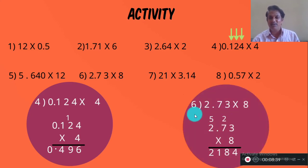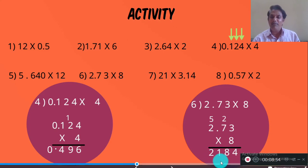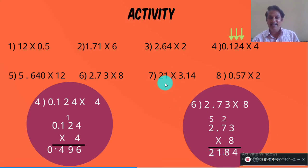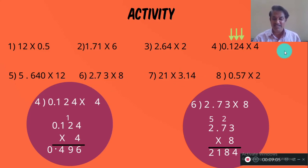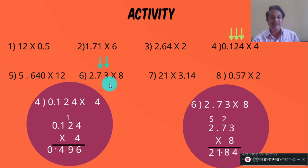Now the second example: 2.73 into 8. First, ignore the decimal point — you get 273. Multiply 273 by 8, you get 2184. Now place the decimal point. Here there are 2 decimal places in the decimal part. So place the point so that there are 2 decimal places in the answer — between 1 and 8. So you get 2 decimal places, and the answer is 21.84.